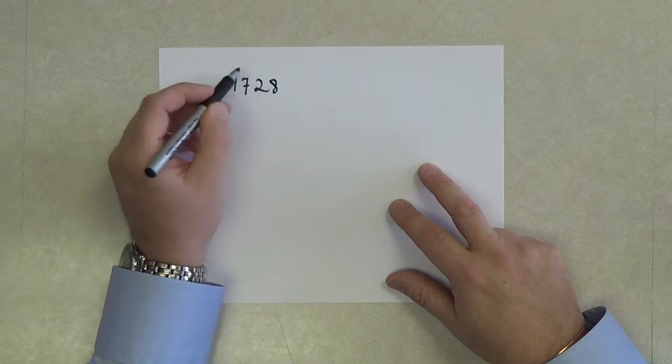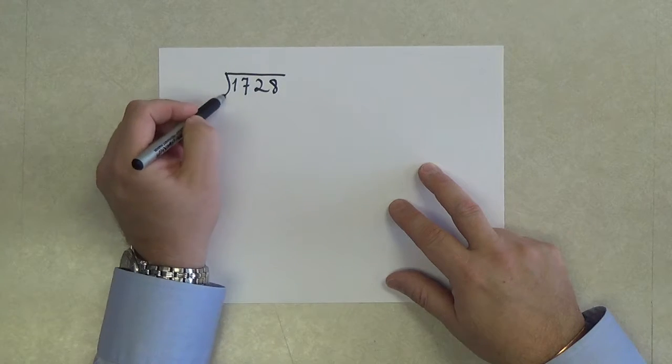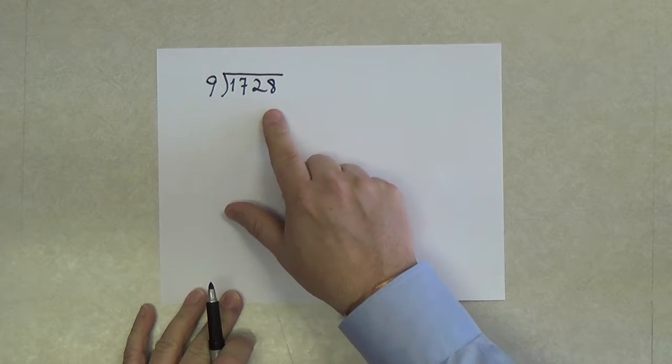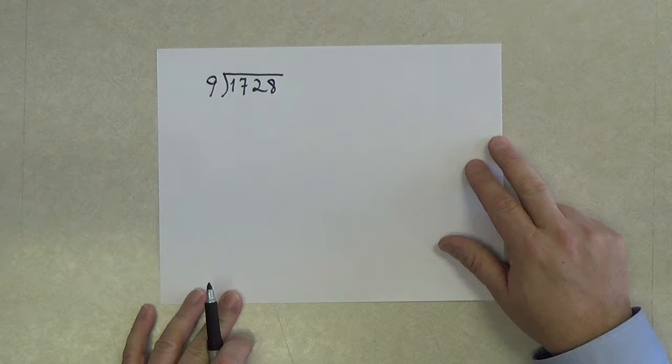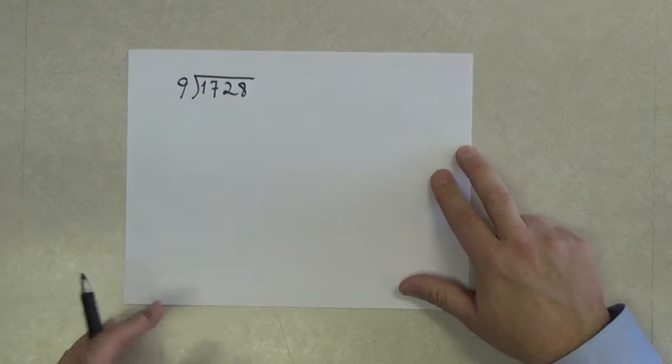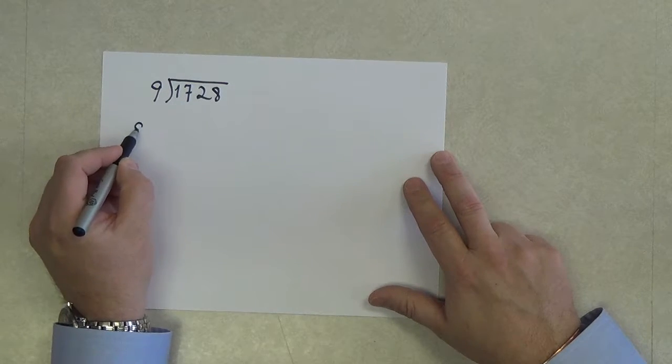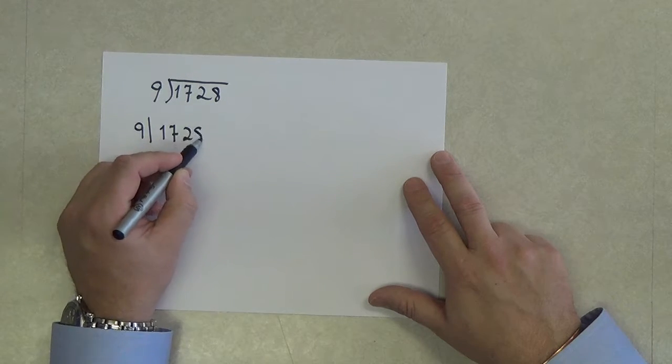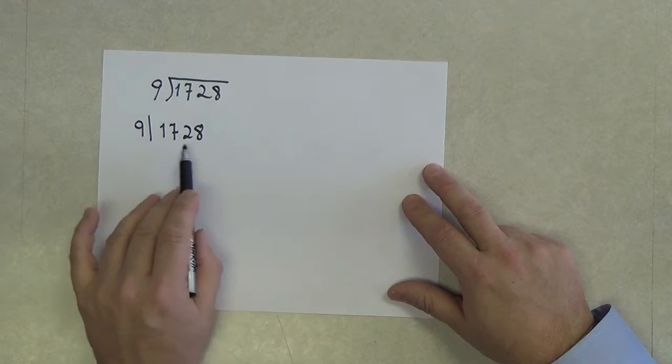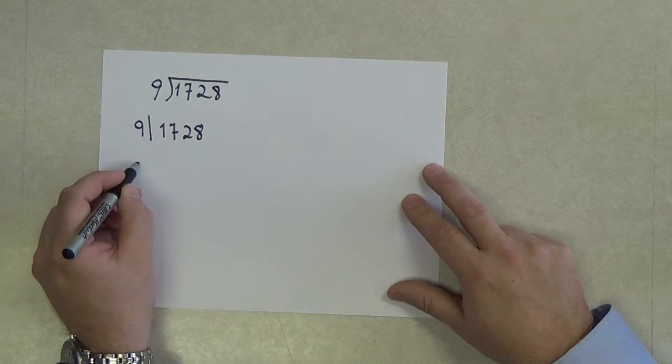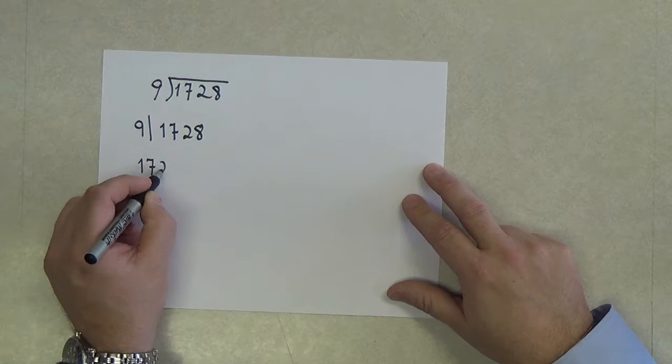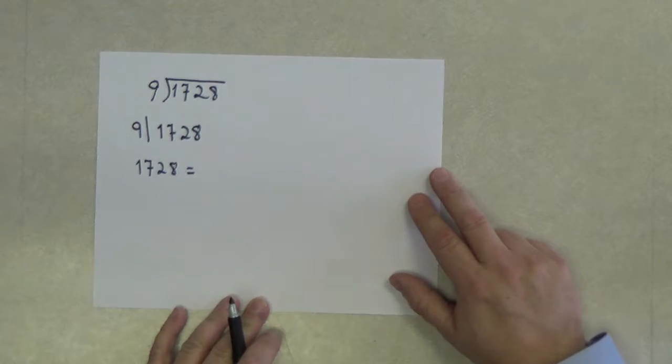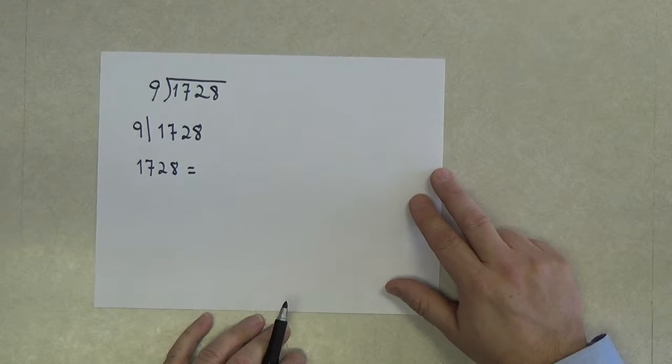1,728. The question is, I wonder what 9 divided into 1,728 might be. Well, one way to accomplish this is we can look at this question: 9 divides 1,728. And I'm going to do this by looking at this number right here, and I'm going to take 1,728, and I'm going to begin to see if I can write it in ways that are related to things I know about 9.